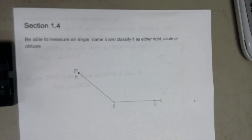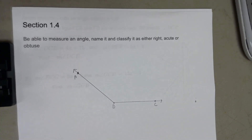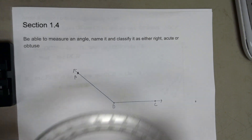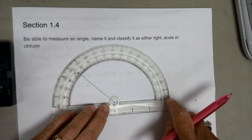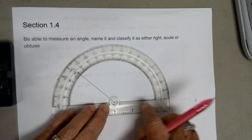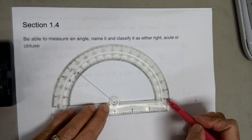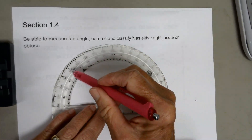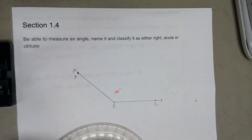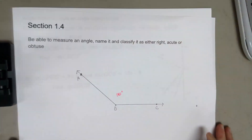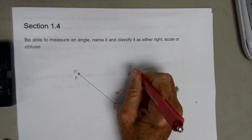Section 14: you need to be able to measure an angle using a protractor, name it, and classify it — right (exactly 90°), acute (less than 90°), or obtuse (greater than 90°). Line up your center point on the vertex, use the outside numbers when the line extends with zero at the top. This angle is approximately 140°, making it obtuse.